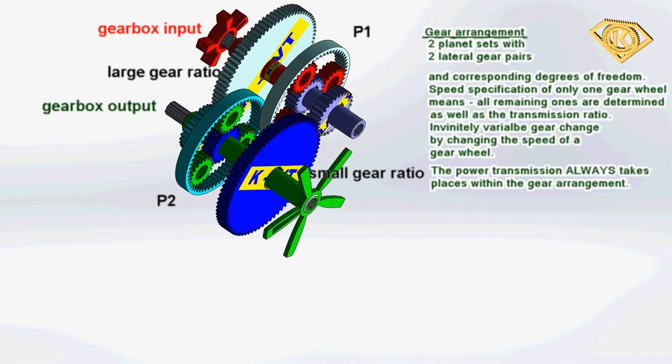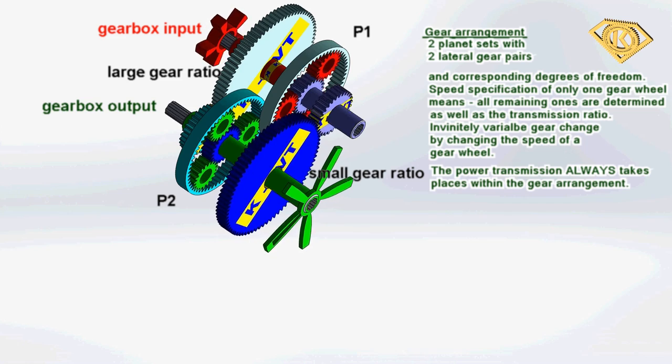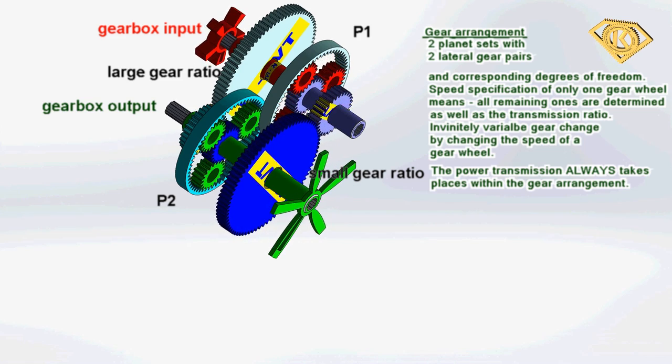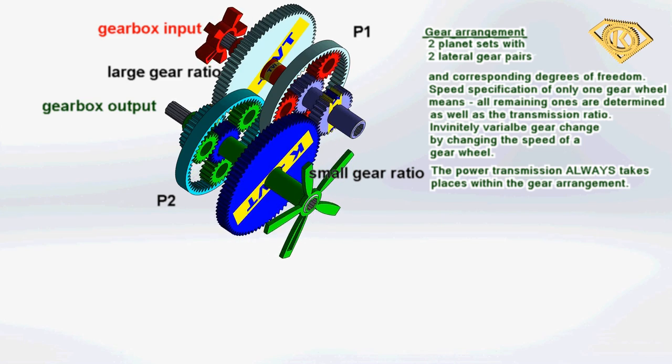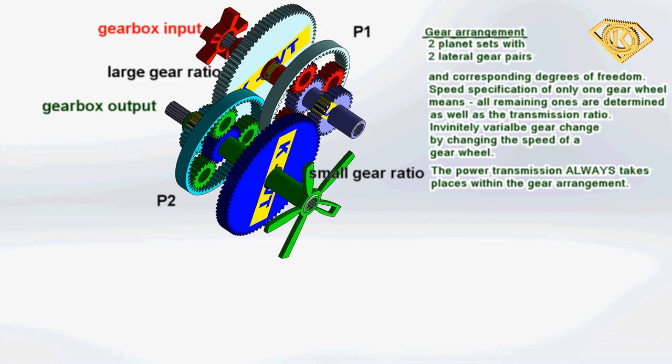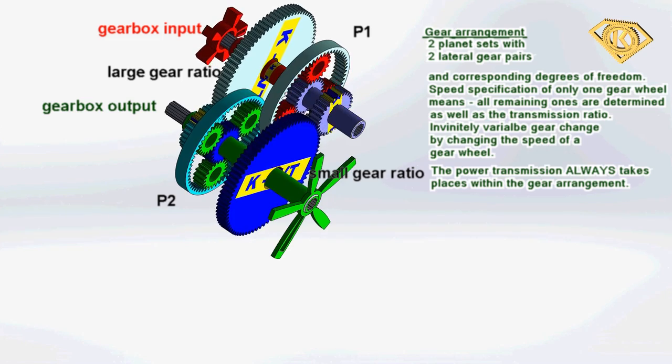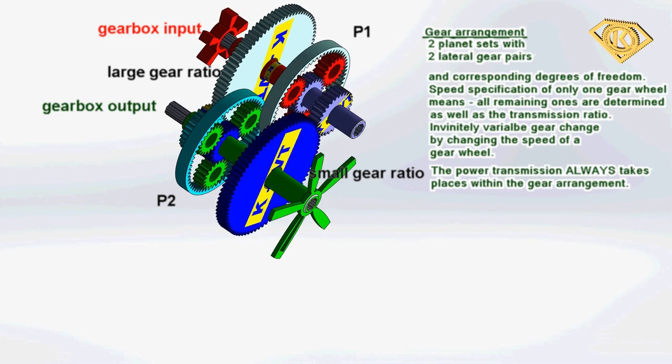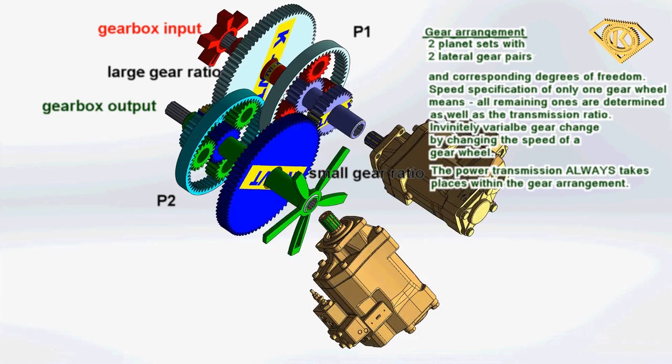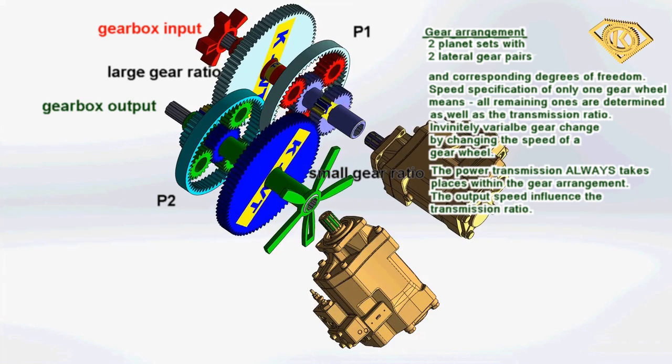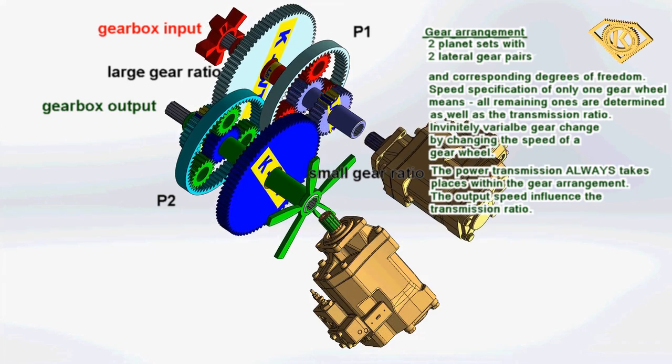The invention takes advantage of this fact and does not use any additional energy to change the speed of a gear wheel. For example, we use the existing output speed to change the transmission ratio. This means that by reducing the idling speed of a gear wheel, the transmission ratio is also changed.